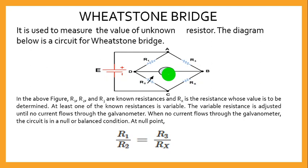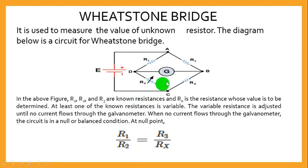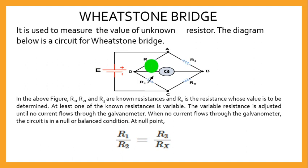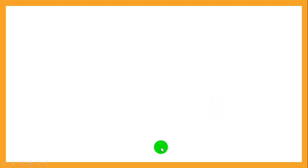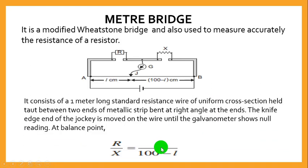The value of EMF at that point equals zero. At null deflection, you can make a comparison between the resistances, and the formula used is: R1 over R2 equals R3 over Rx. Since R2 has been varied to a known value and R1 and R3 are known, the only unknown is Rx, and you can determine its value from this formula.